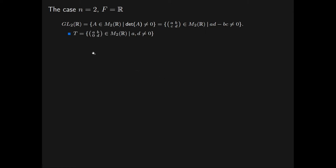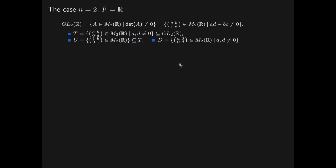We consider the following three subsets of GL2R. The subset T consists of all of the so-called upper triangular matrices — the 2 by 2 real matrices that are invertible and have a zero in the bottom left entry. We then consider the subset U of T consisting of upper triangular matrices that have 1s along the main diagonal. And we consider the subset D consisting of all invertible diagonal 2 by 2 real matrices.